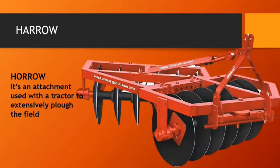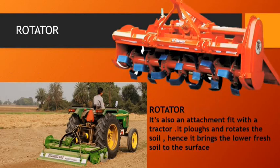A harrow is an attachment used with the tractor to extensively plough the field. A rotator is also an attachment fitted with the tractor — it ploughs and rotates the soil, bringing the lower fresh soil to the surface.